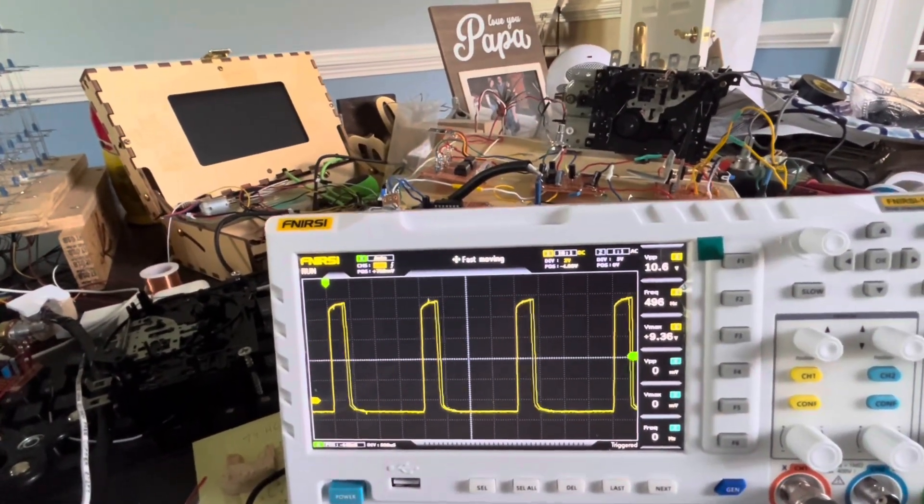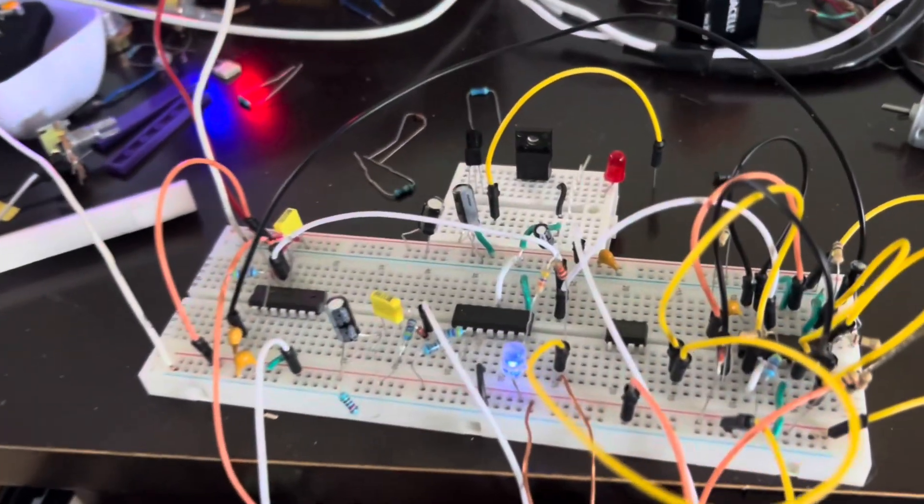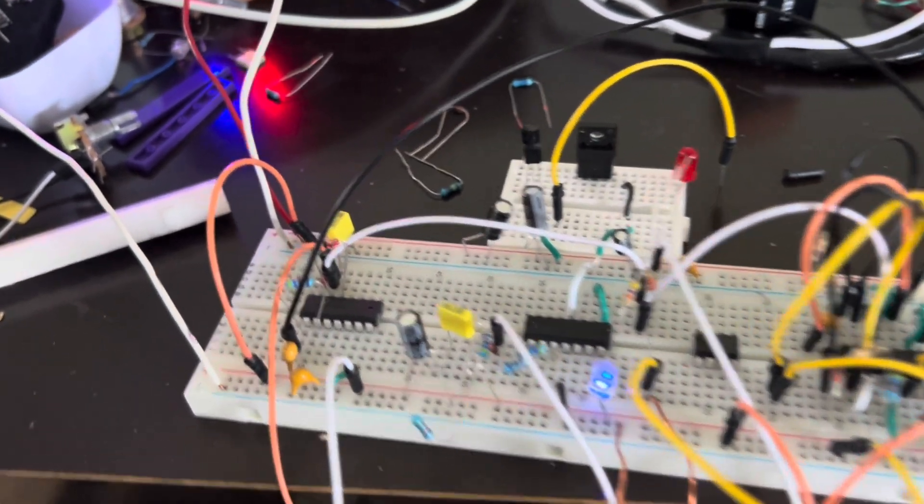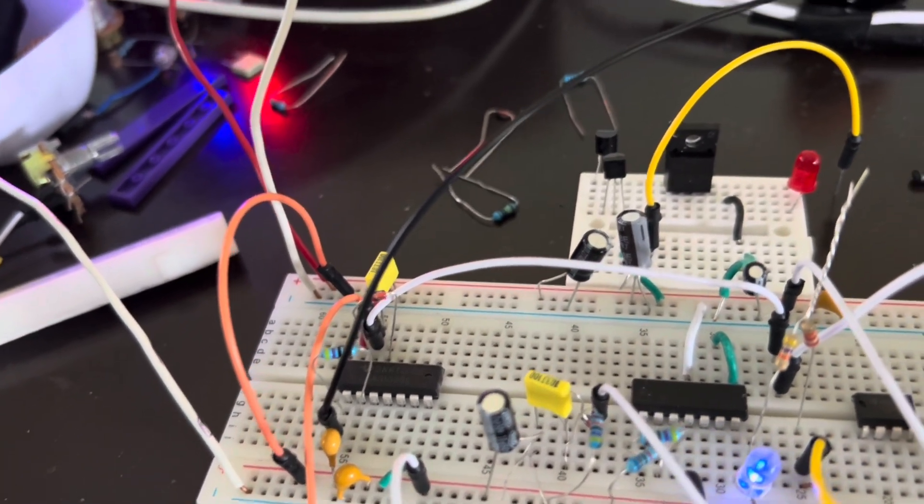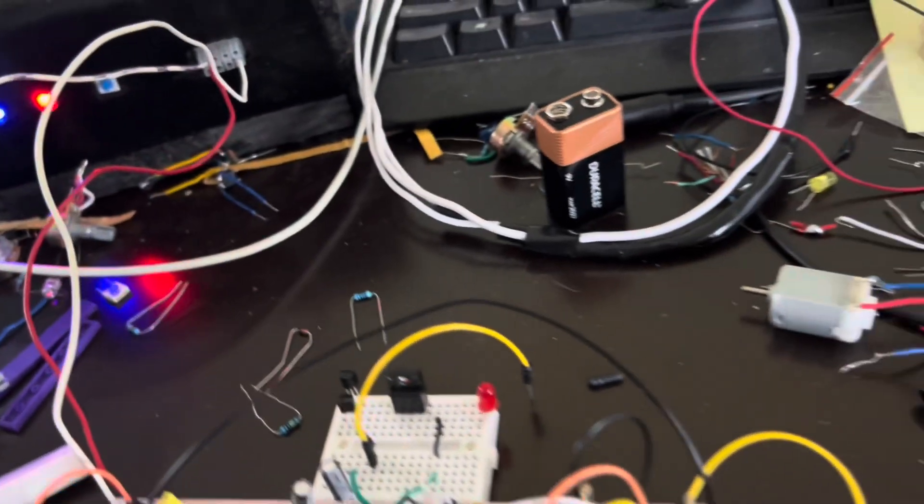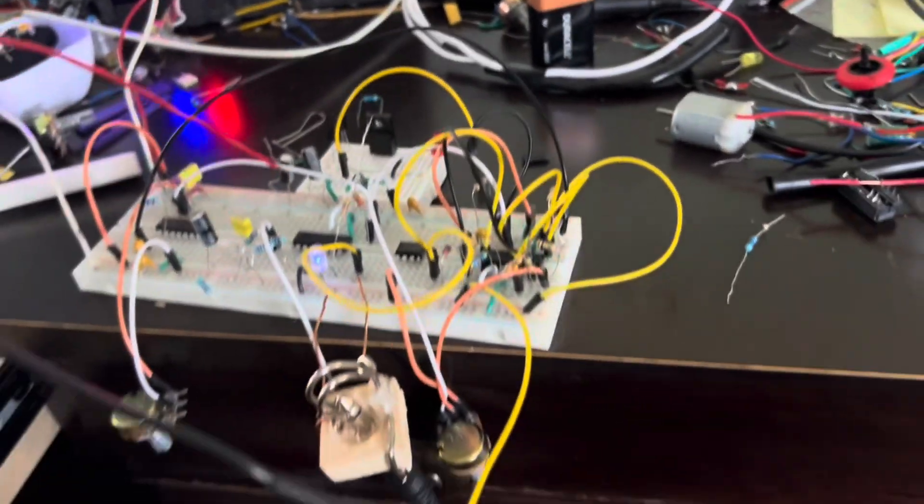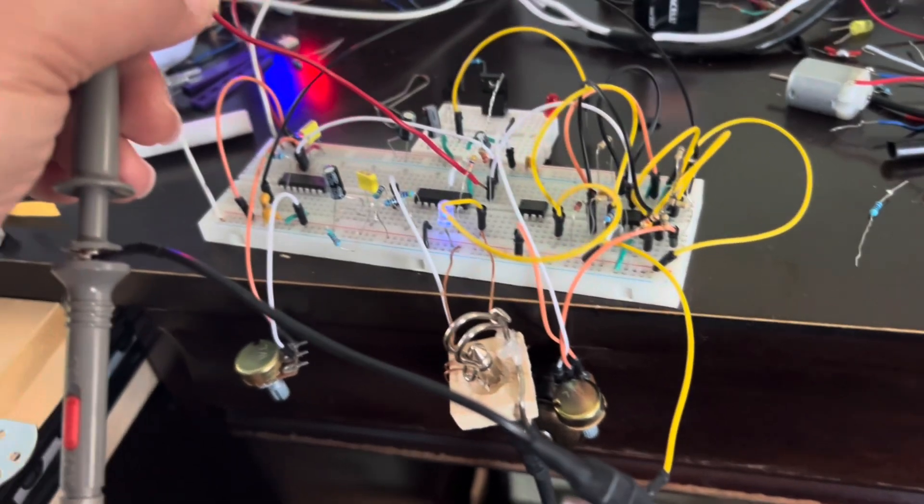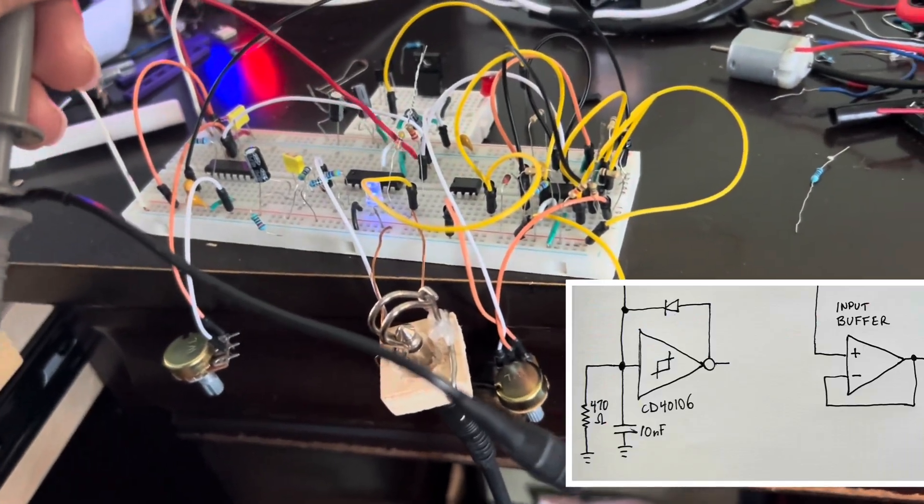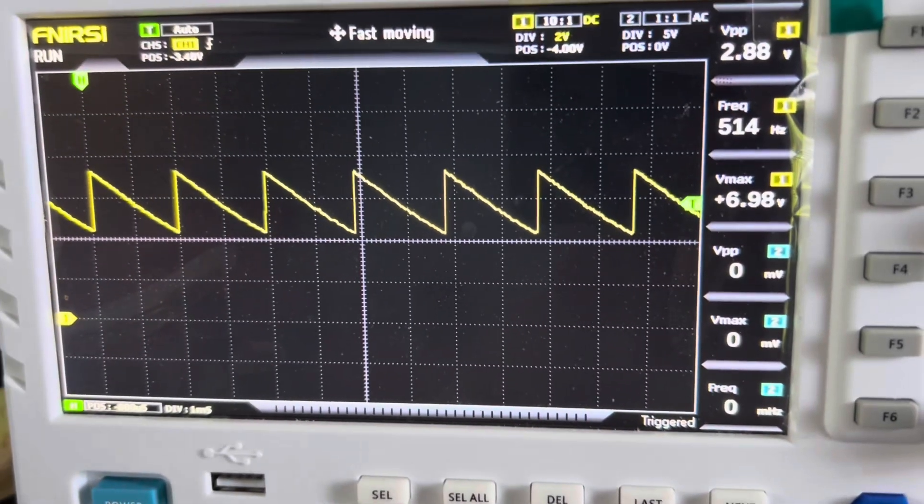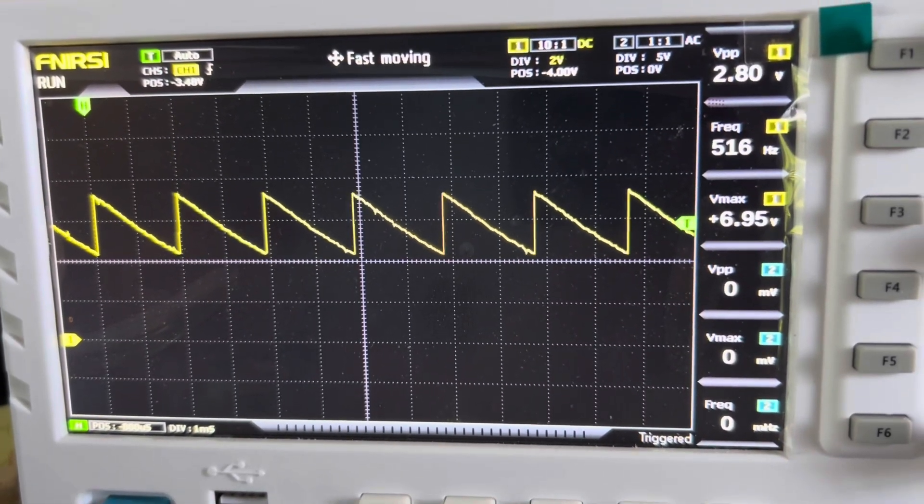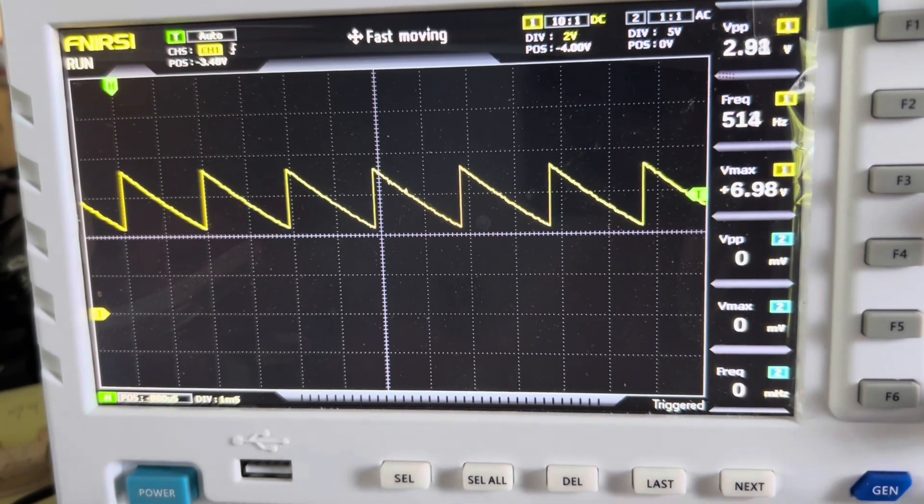So here's our PWM generator circuit. It starts with this CD40106 oscillator and it's a sawtooth wave generator. And so I'm going to probe the actual sawtooth wave. And you can see it there. It's centered around 6 volts.